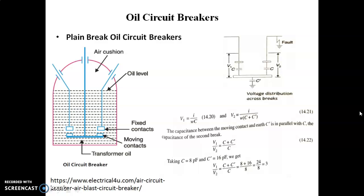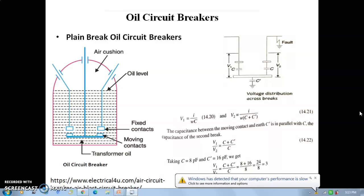The separating contacts of the circuit breaker are made to separate within an insulating oil, because insulating oil has better insulating properties than air.